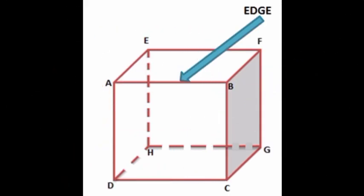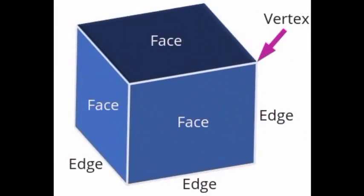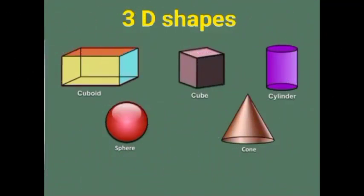Where two faces meet in a line is called an edge. Where two or three edges meet at a point is called a vertex or corner. Let us see some important 3D shapes.